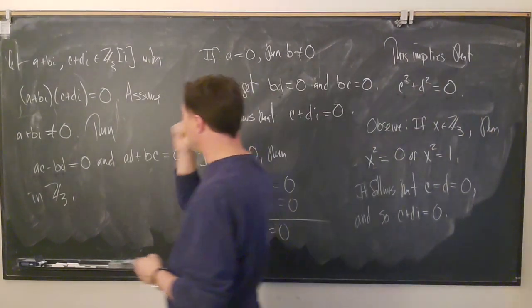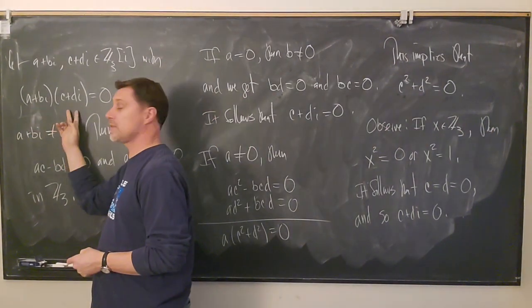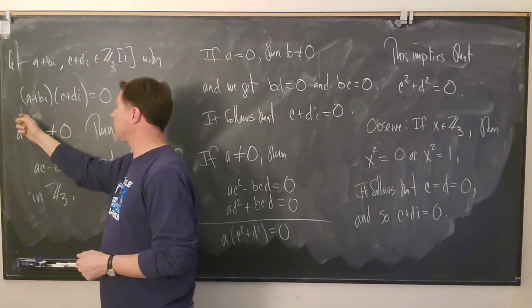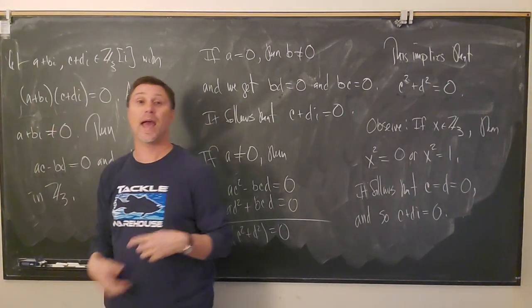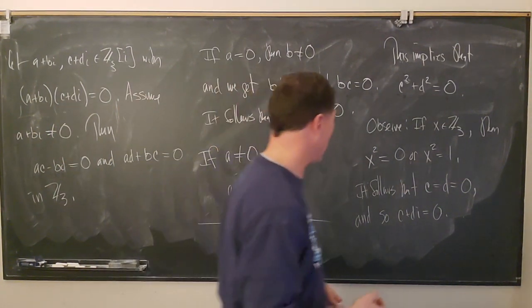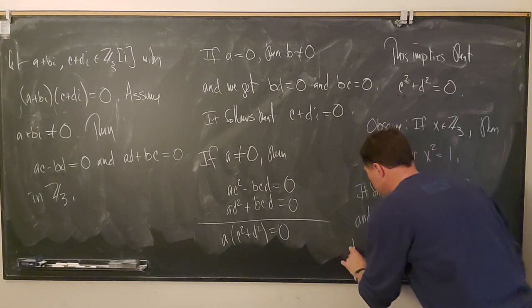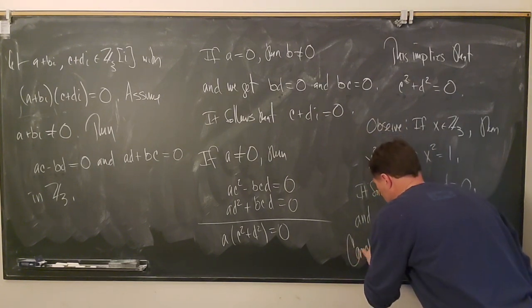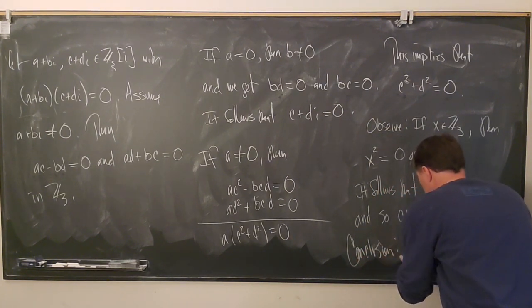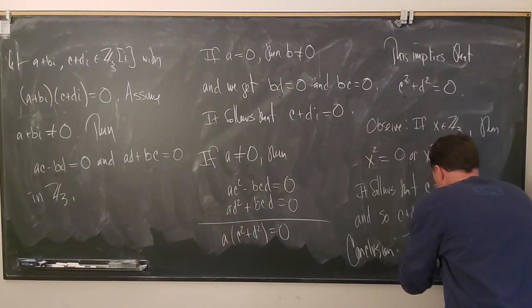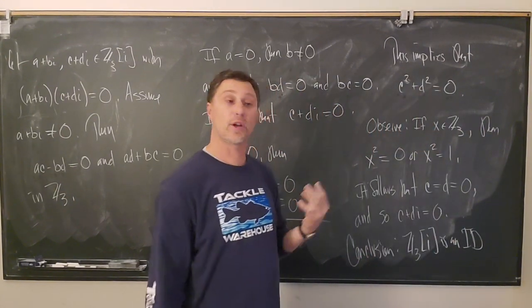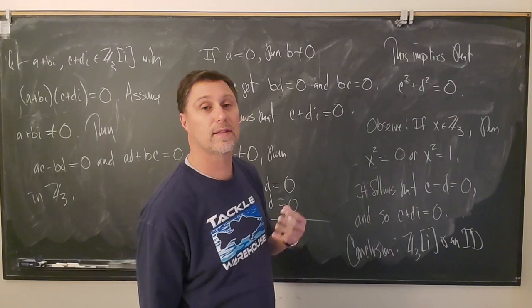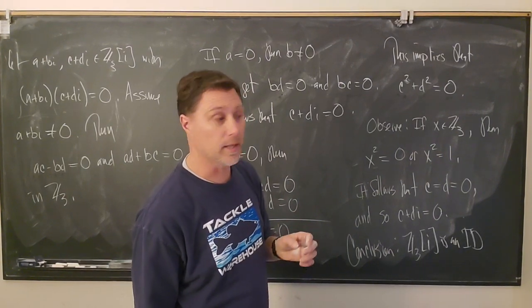So what do we know? If (a + bi)(c + di) = 0 and we assumed a + bi ≠ 0, then c + di must equal zero. Conclusion: Z_3[i] is an integral domain. Now apply Theorem 19.3 to conclude that Z_3[i] is actually a field.